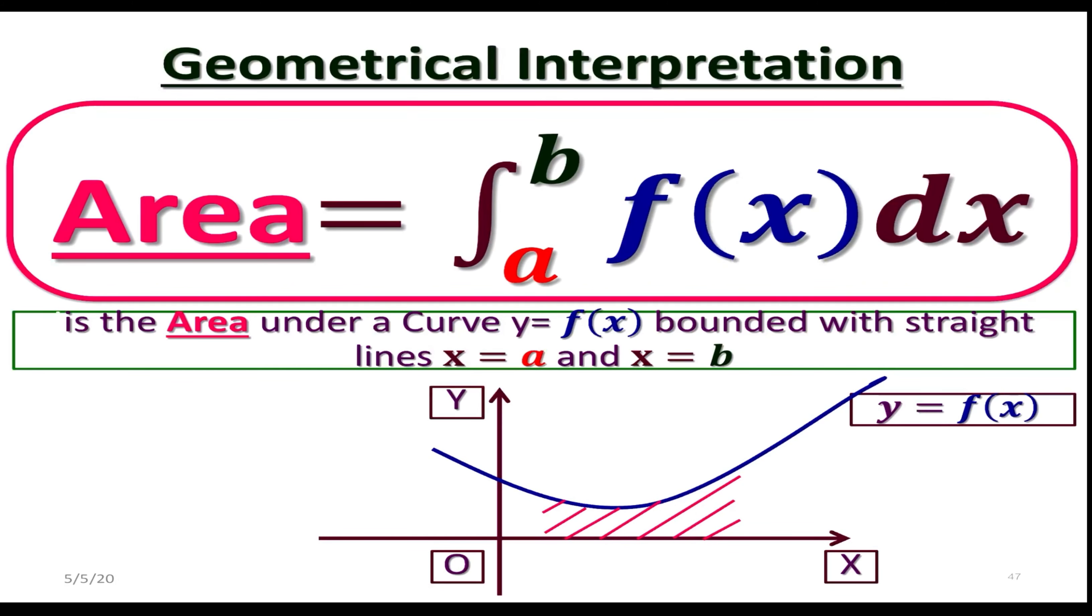If you look at the picture, we are given a curve, f of x, and also two lines, x equals a, and x equals b. This shaded area under this curve, limited with these straight lines, and actually x-axis, could be found by taking the definite integral from a to b, f of x dx.